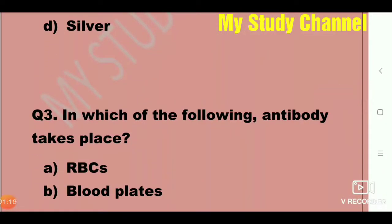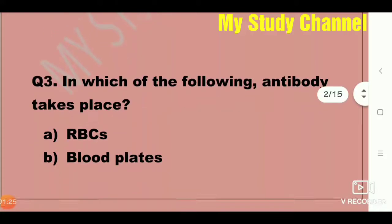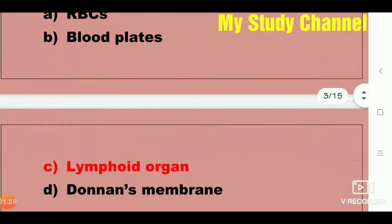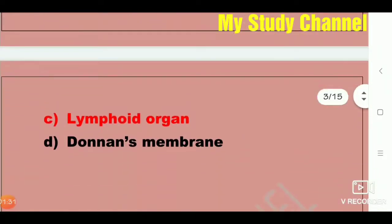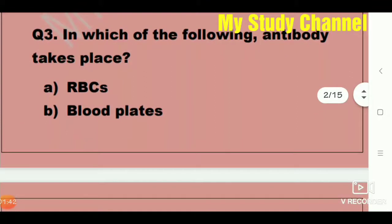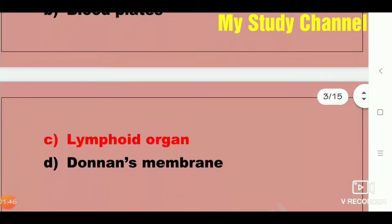Next question: In which of the following do antibodies take place? Options are RBCs, blood platelets, lymphoid organ, and donor's membrane. Friends, here lymphoid organ is the right answer. Antibody production takes place in lymphoid organs.